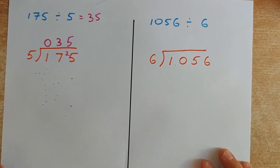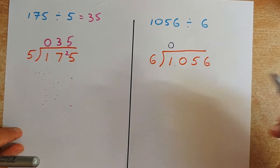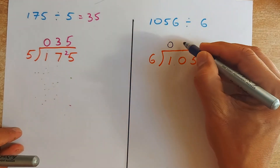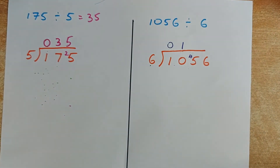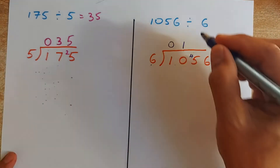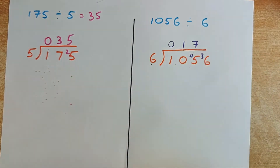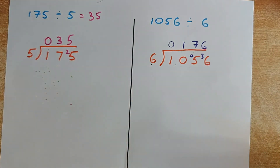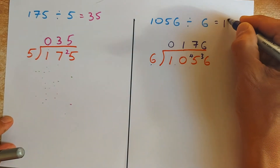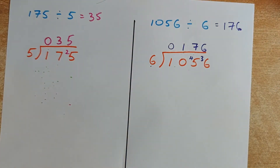Now do one more example, then we go into a more complicated one. We have 1056 divided by 6. 1 cannot divide by 6, so put a 0. The next step: this becomes 10. 10 divided by 6 is 1. 1 times 6 is 6, remainder 4. Put the 4 there, so now you have 45. 45 divided by 6 — the nearest whole number is 7. 7 times 6 is 42, you have 45, remainder 3. Last step: 36 divided by 6 is 6. 6 times 6 is 36, no remainder. So the answer is 176. 1056 divided by 6 gives you 176.